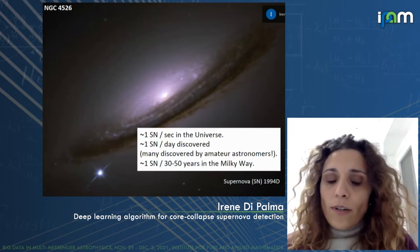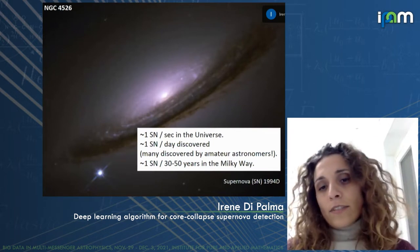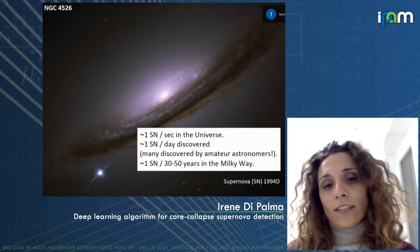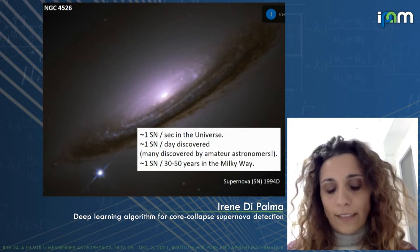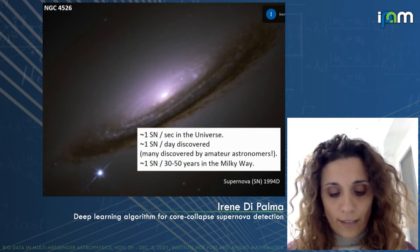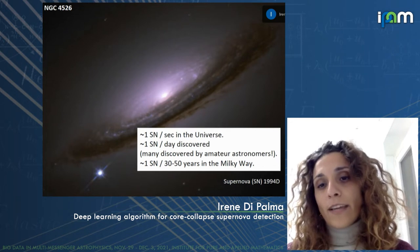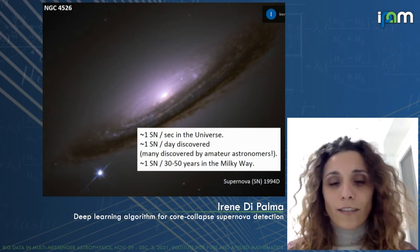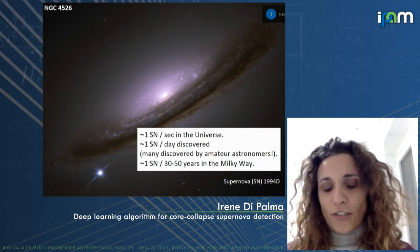As you know, on a daily basis astronomers discover core collapse supernovae in the universe at almost one per day. The rate that we have for our galaxy, the Milky Way, is one core collapse supernova every 30 to 50 years.